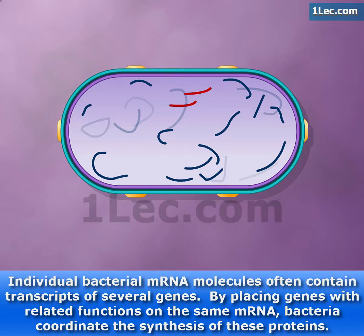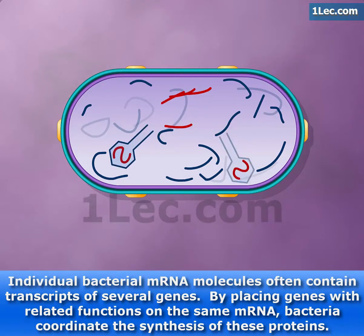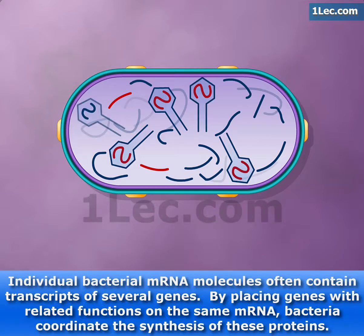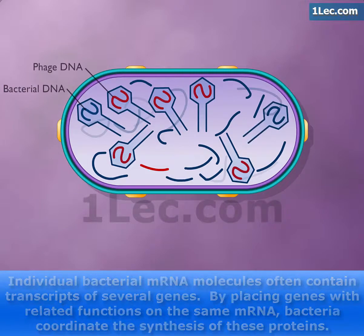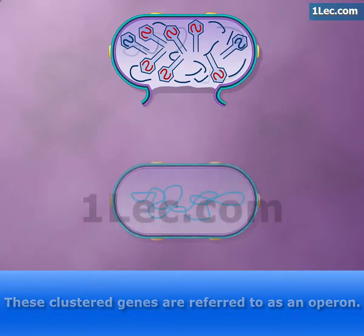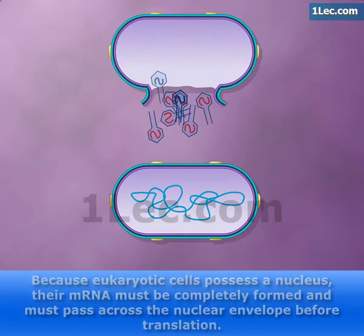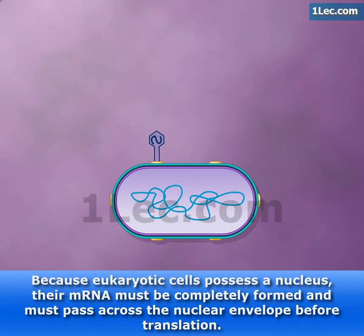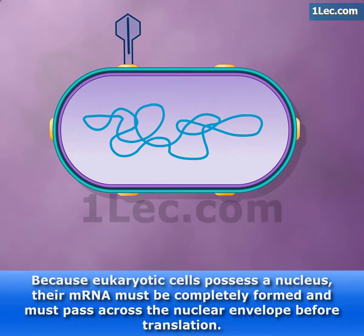Phage DNA is replicated and phage coat proteins are produced. During formation of the mature phage particles, a few phage heads may surround fragments of bacterial DNA instead of phage DNA. The phage particle carrying the bacterial DNA then infects another cell, transferring the bacterial DNA to the new cell.